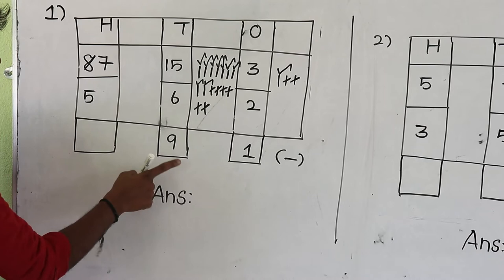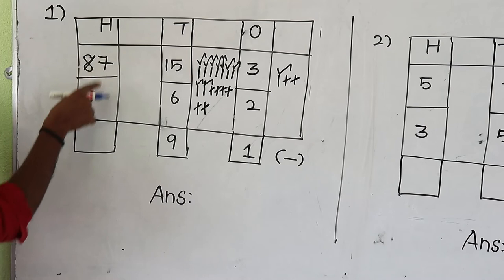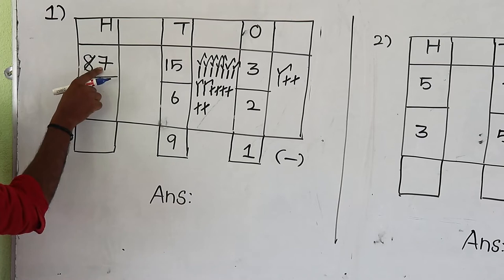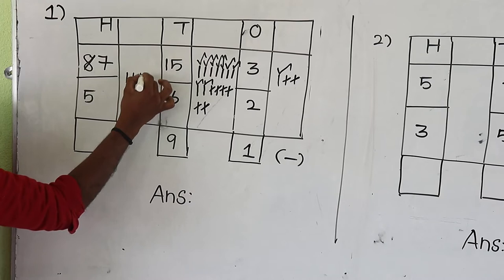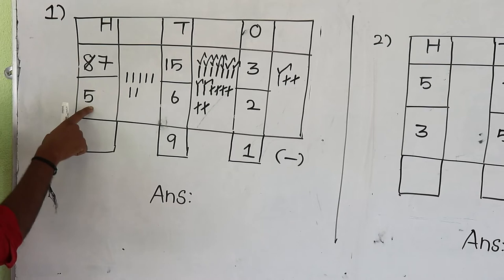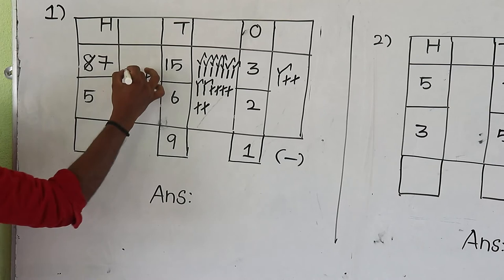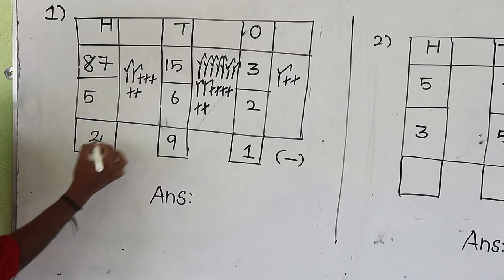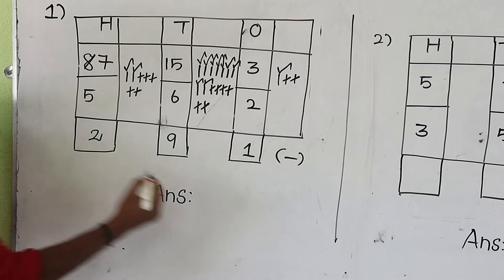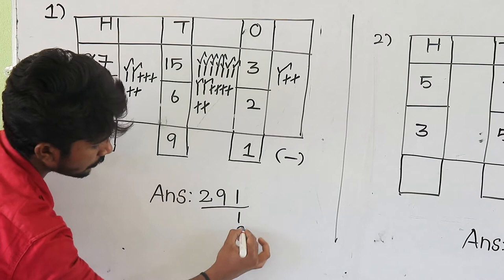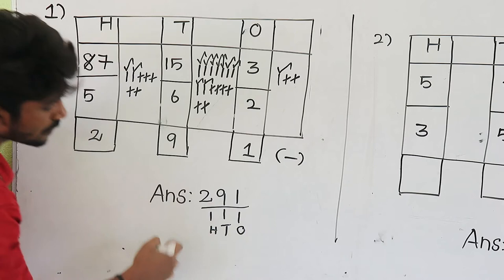Now for the hundreds value, compare the two numbers. Upper value is 7, lower value is 5. So 7 is the greatest number and 5 is the smallest number — subtraction is possible. Draw 7 lines, then cancel 5 lines, count remaining: 1, 2. So write the answer: 2. So 7 minus 5 is equal to 2. Answer: first digit 2, second digit 9, third digit 1. Here 1 is the ones value, 9 is the tens value, 2 is the hundreds value. So the answer is 291.